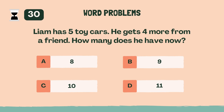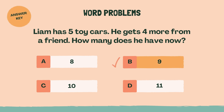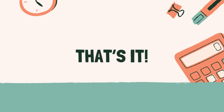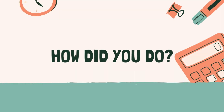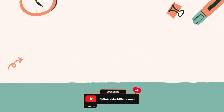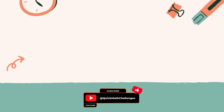Category 6: Word Problems. 3, 2, 1, go. Liam has 5 toy cars, he gets 4 more from a friend, how many does he have now? B, 9. That's it! How did you do? Let us know your score in the comments below. If you enjoyed it, don't forget to hit like and subscribe, and if you're up for more challenges, stay tuned.